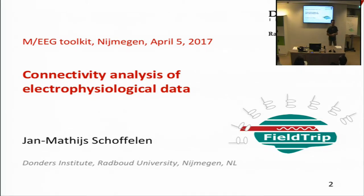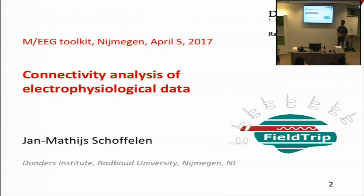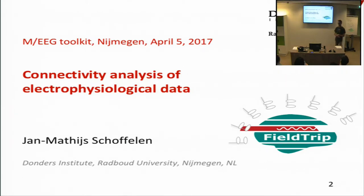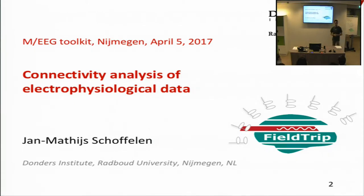Let me introduce myself. My name is Jan-Mathijs Schoffelen. I'm an associate PI at the DCCN, which means I'm running my own research program. My work is concerned with systems neuroscience — how brain regions interact across different cognitive domains and perceptual systems. I'm particularly interested in studying connectivity between brain regions, which is the topic of today.